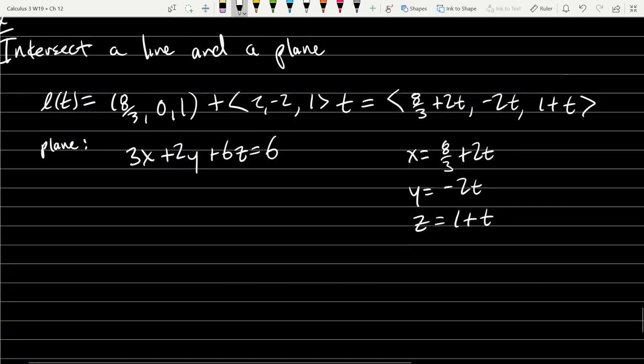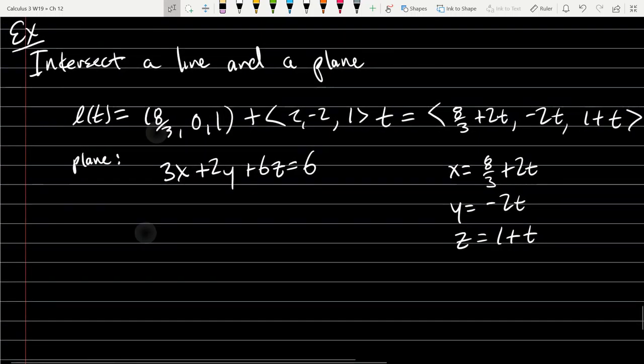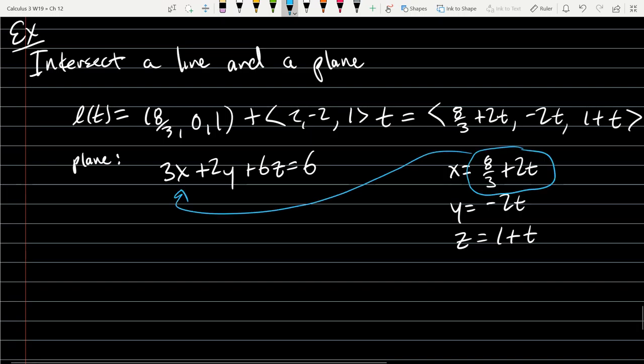Now, maybe it's a little bit more clear what we should do. We need to find a common solution to these equations. There's t's on the equations on the right and no t's on the left. So what we're going to do is take what we have for x, plug it in for x, take what we have for y, plug it in for y, and what we have for z, plug it in for z.